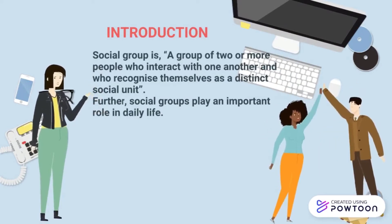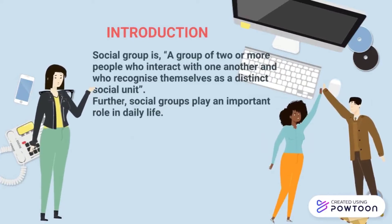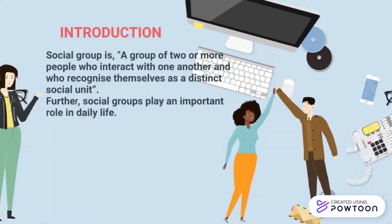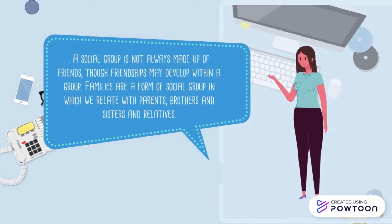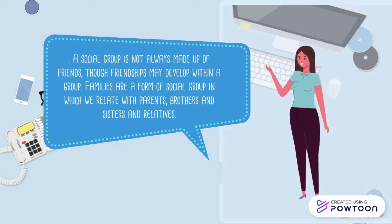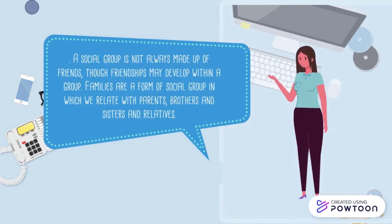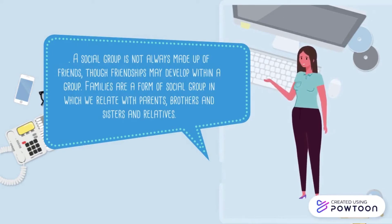Examples of groups include families, companies, circles of friends, clubs, local chapters or fraternities, and local religious groups. Renowned social psychologist Muzaffer Sherif formulated a technical definition of a social group. A social group is not always made up of friends, though friendship may develop within a group. Families are a form of social group in which we relate with parents, brothers, sisters, and relatives. In this unit, we are going to learn about what groups are, describe their characteristics, and learn the various types of groups and their functions.